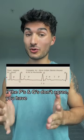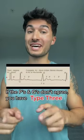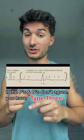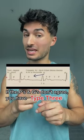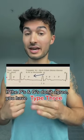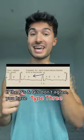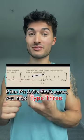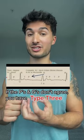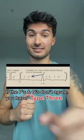If the Ps and QRSs don't agree, you have type 3. As you can see here, the P wave isn't followed by a QRS, so the heart is contracting with no subsequent ventricular contraction. There you have it.